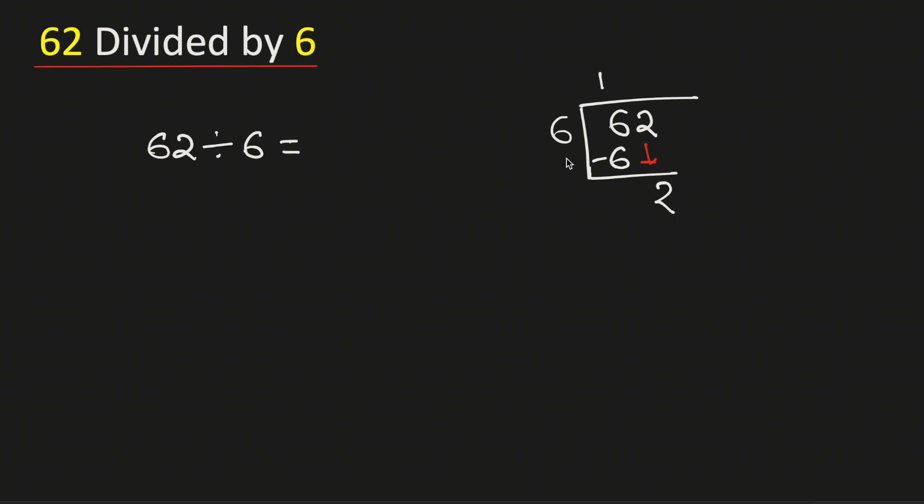But again, see that 2 is less than 6. But as we have brought down the number here, we need to divide it. We know that 6 times 0 is 0. Subtract, we get 2.